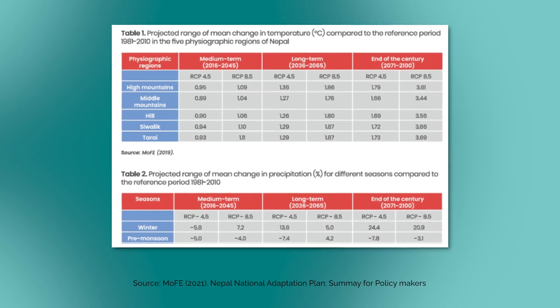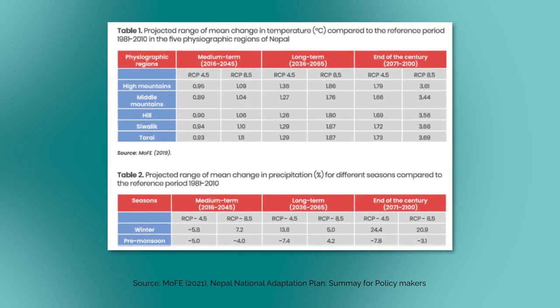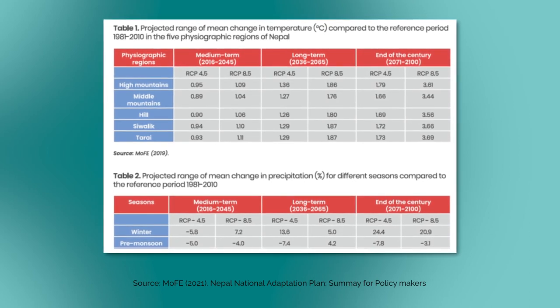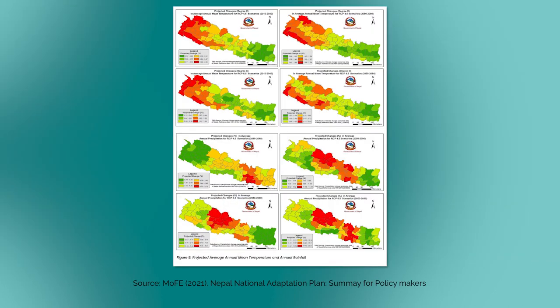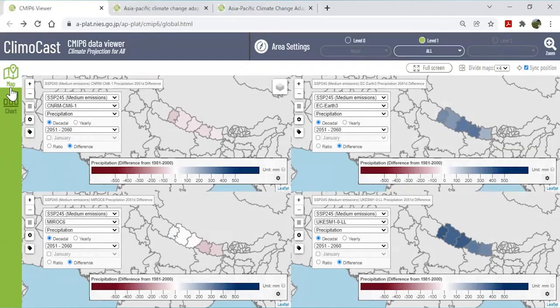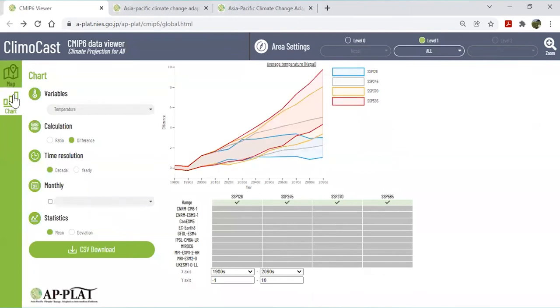Section 3.2 on projected climate change of the NAP shows the future projections of temperature and precipitation for three periods and two emission scenarios. Of course, there are many other climate projection tools besides Climocast, and it is likely that this map was created using one of these tools. The output data from Climocast can be used to show more explicitly the differences between climate models and the resulting uncertainty in future climate projections. You can also use the chart mode function to insert graphs showing the actual climate and precipitation change figures in an easily understandable way.